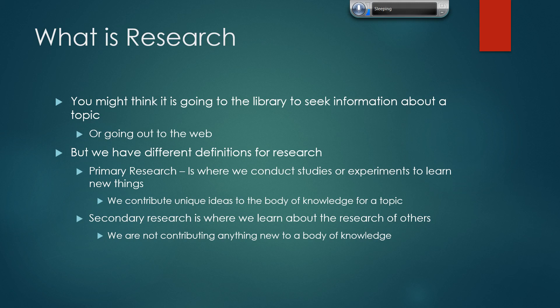Primary research is often used to further somebody else's work, or it could be something completely new. The result will typically be some sort of presentation or publication, and if big conclusions are drawn, it might hit the mass media. Secondary research, by contrast, is where we're looking at the work of others. When a primary researcher completes a study, he or she produces a written record — usually a journal article or even a book. Secondary research is pursuing what has already been known or written, as opposed to primary research which pursues what isn't yet known.